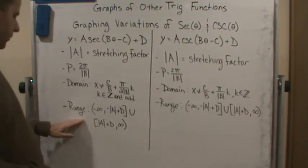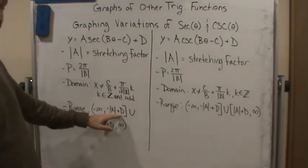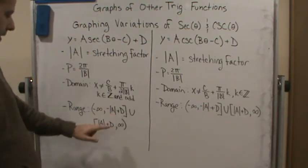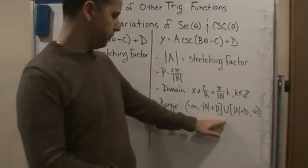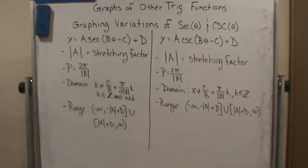And then the range. Notice that now we add the d, the vertical shift. Notice that that's included, but the range is the same for both secant and cosecant.